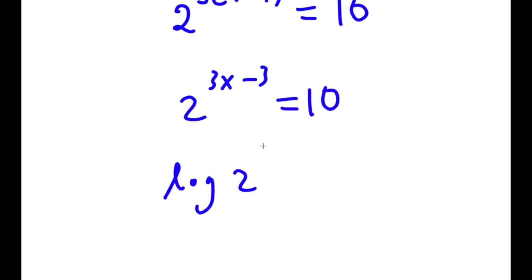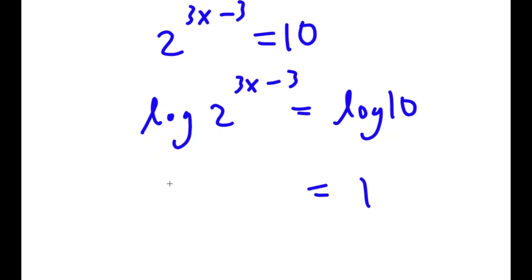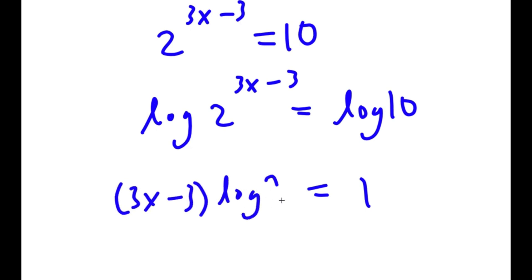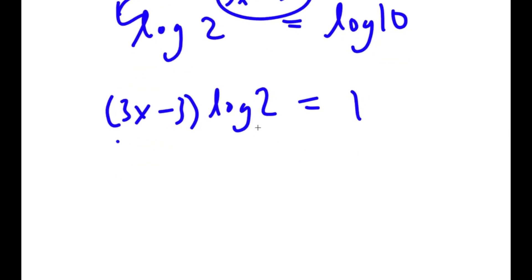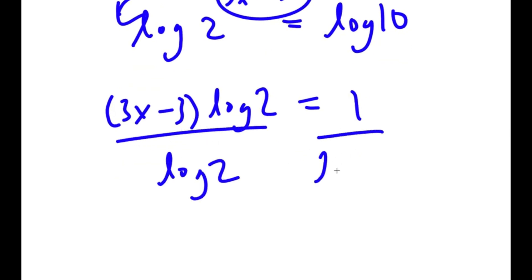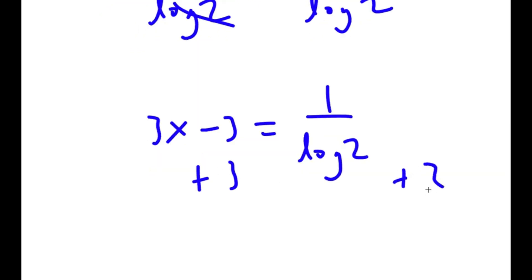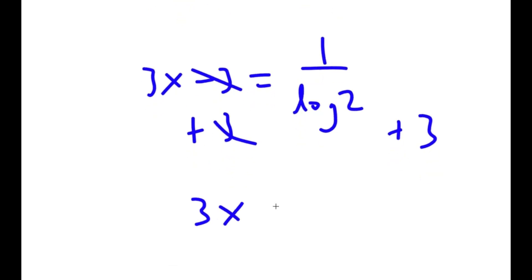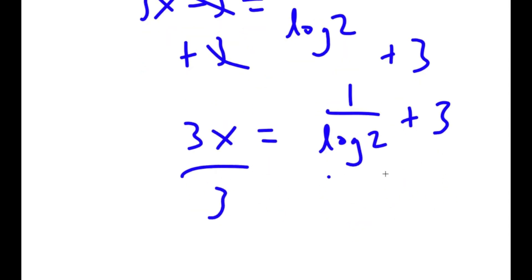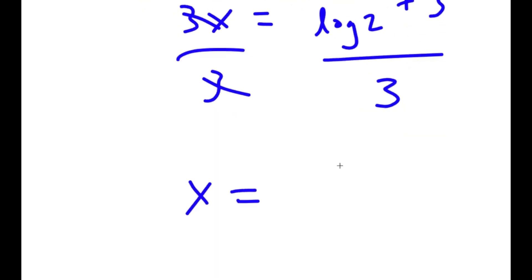Now I'm going to take the log on both sides. I get log of 2 to the power of 3x minus 3 is equal to log 10. And log 10 equals 1. So I get 1 equals 3x minus 3 times log 2, because I can move the exponent to the front. Dividing both sides by log 2, I get 3x minus 3 equals 1 over log 2. Adding 3 to both sides gives 3x equals 1 over log 2 plus 3, and dividing by 3 gives x equals 1 over 3 log 2 plus 1.